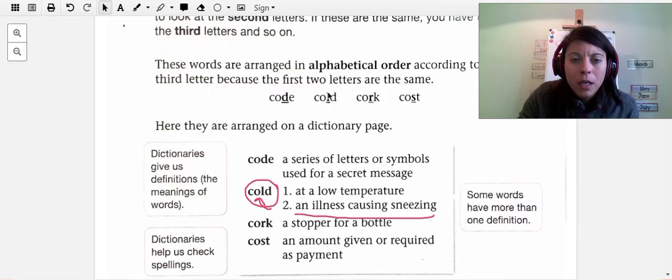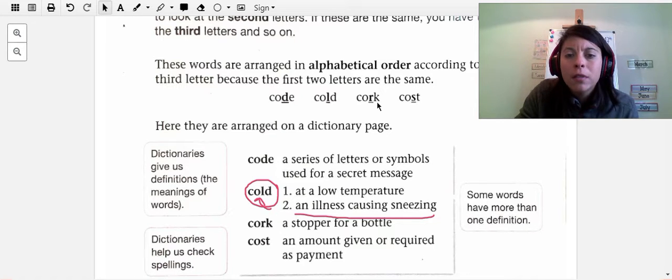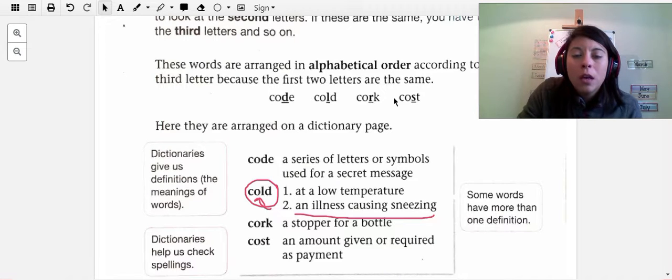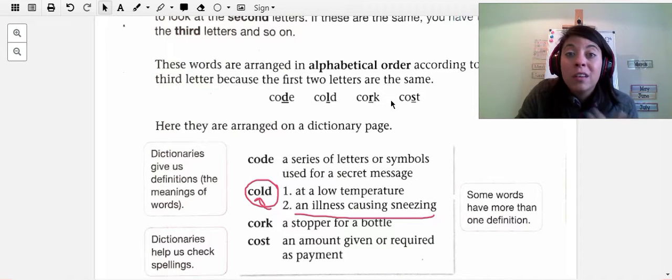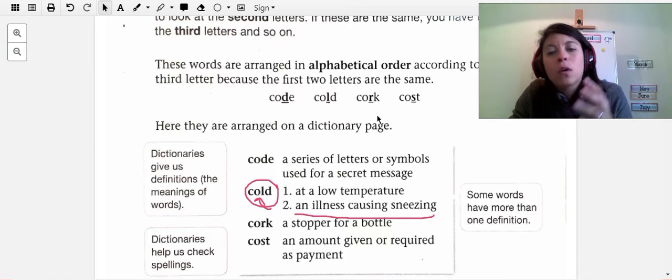I'm going to go back to the example that we did here: code, cold, court, and cost. They all begin with a C, so you go to the next letter which is an O. They all have the second letter O, and then the third letter is what's going to make you put these words in different order. Code goes first because in the alphabet D goes first, or D goes before L, and L goes before R, and R goes before S.